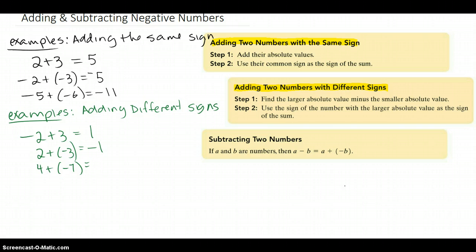So what would this one be? If you take 7 minus 4, it's 3, and the 7 is larger than the 4, so it's negative 3.